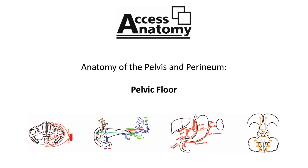The three parts of levator ani — puborectalis, pubococcygeus, and iliococcygeus — all converge at a central midline of the pelvis, where they unite with the contralateral levator ani muscles.